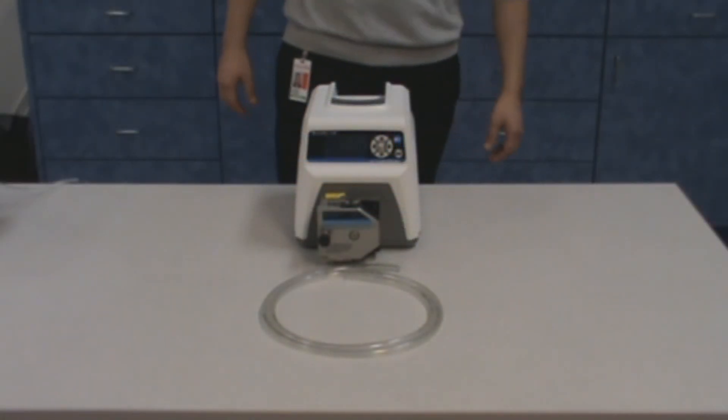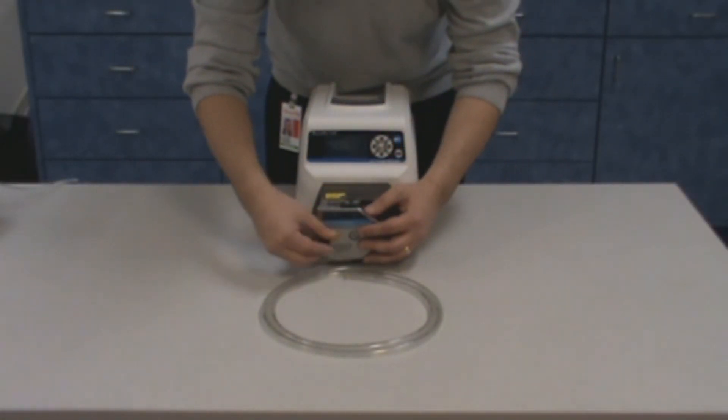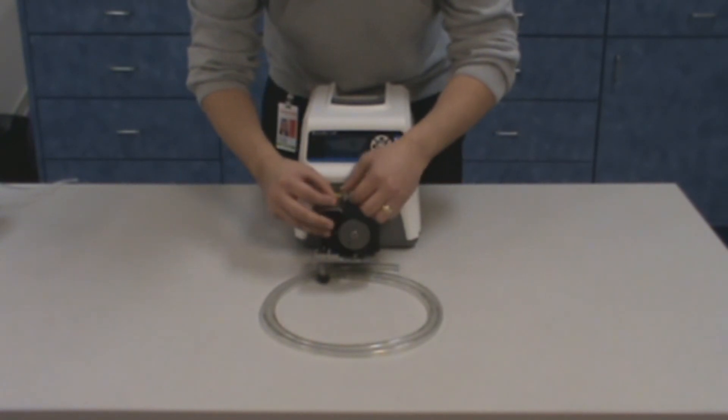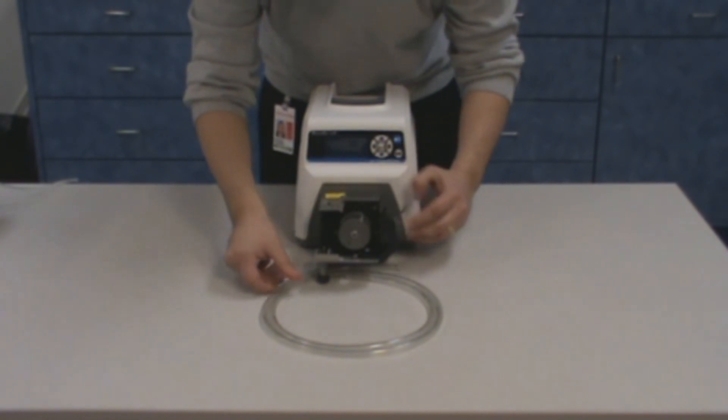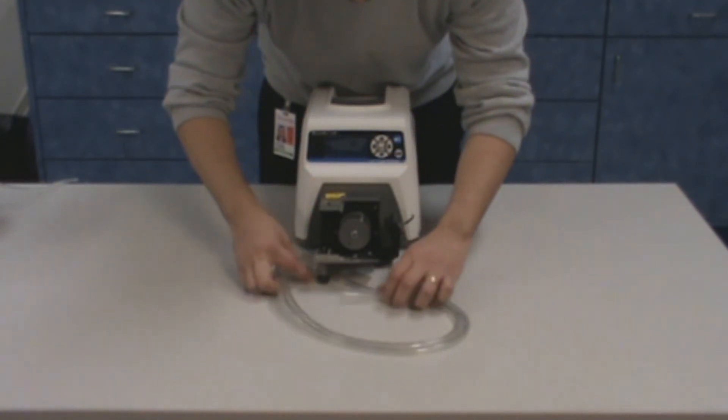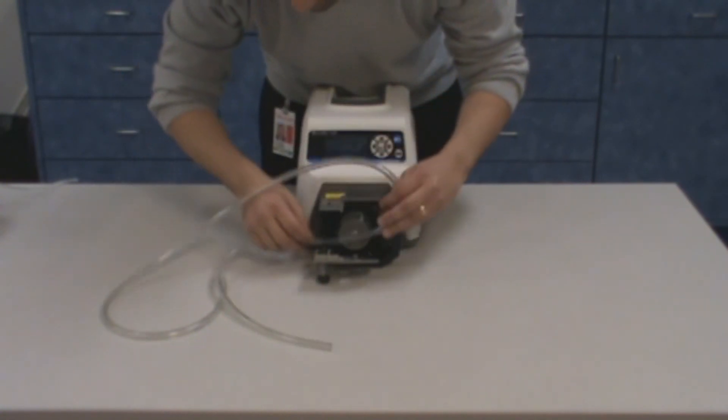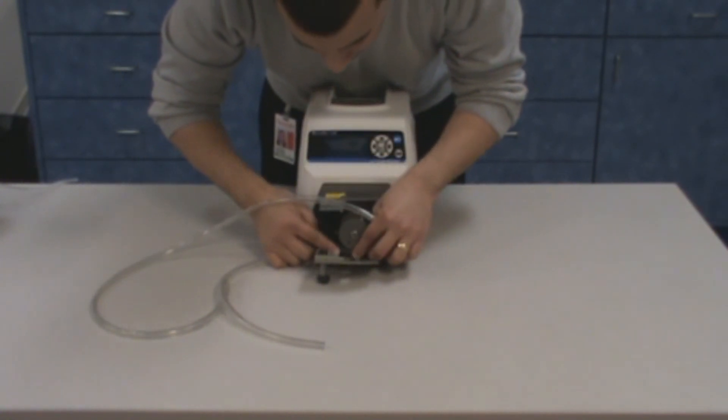To begin, rotate the tubing retainer knob counterclockwise to release the retainer and then pull open the cover. Next, lift the latch to open the occlusion bed and insert the tubing inside of the tubing guide. Insert the tubing around the rotor with the ends of the tubing extending out of the tubing entrance and exit. Make sure to center the tubing on the roller.